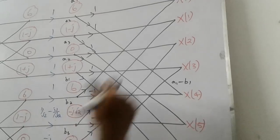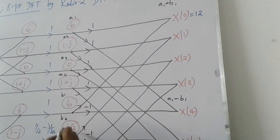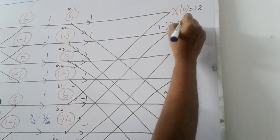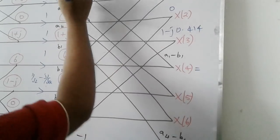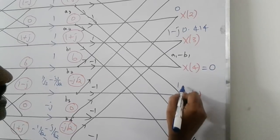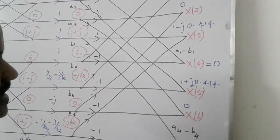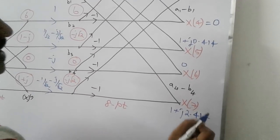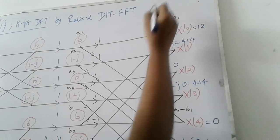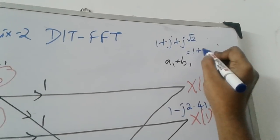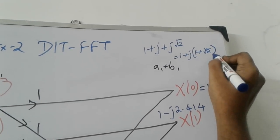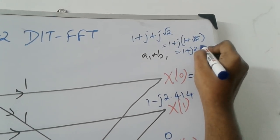A1 plus B1, 6 plus 6, 12. Then 1 minus j plus minus j root 2. This will be 1 minus j 2.414. This is 0. 1 minus j 0.414. And this will be 6, A1 minus B1, 6 minus 6, 0. And this is 1 plus j 0.414. Last one A4 minus B4. A4 is 1 plus j minus B4, minus of minus j root 2 is plus j root 2. If you take j as common, 1 plus root 2, root 2 is 1.414 plus 1 is 2.414. So the answer is 1 plus j 2.414.